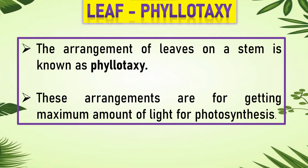The arrangement of leaves on a stem is known as phyllotaxy. These arrangements are for getting the maximum amount of light for photosynthesis. We all know that sunlight is necessary for photosynthesis, with the use of chlorophyll which is present in the leaf.